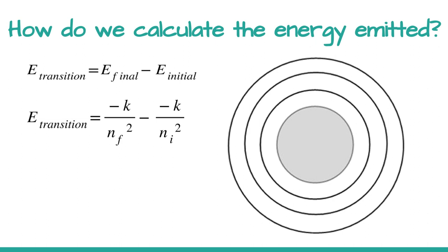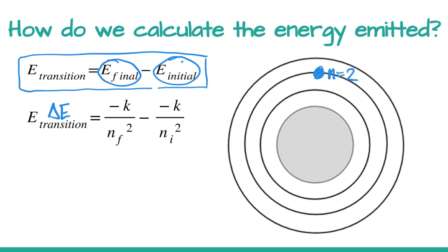We can calculate the energy emitted from a transition from one level to another by looking at the difference between the two energies. The transition energy, delta E, is the energy of the final minus the energy of the initial. If we're looking at a transition from n equals 2 back down to n equals 1, then n equals 1 is our final and n equals 2 is our initial.